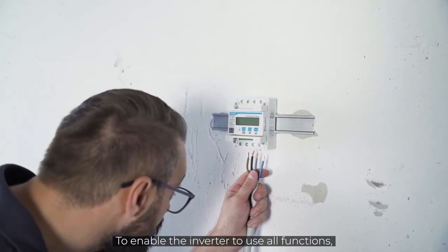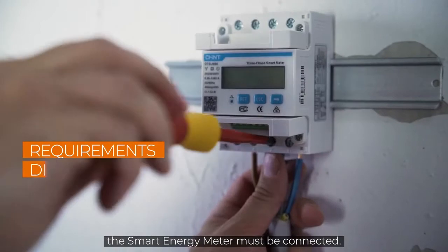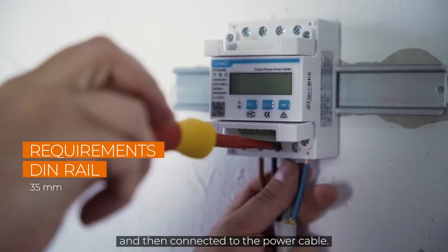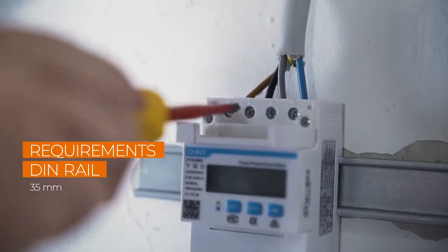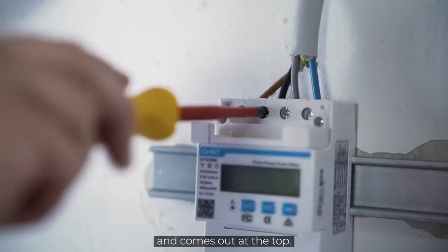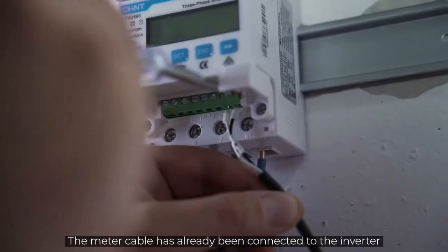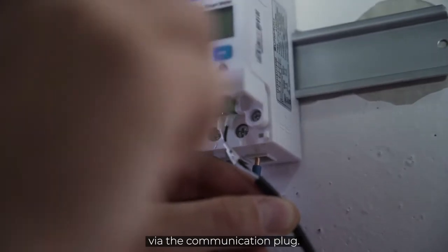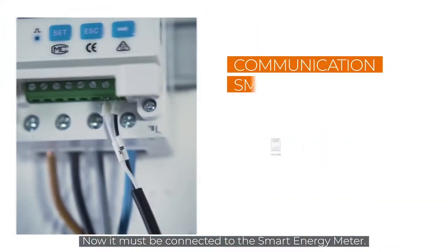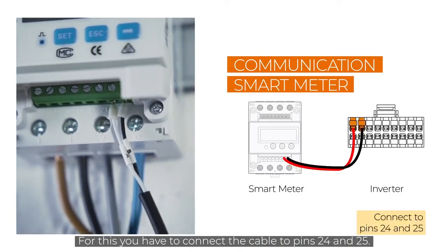To enable the inverter to use all functions, the smart energy meter must be connected. This is mounted on a DIN rail and then connected to the power cable. The power goes into the meter at the bottom and comes out at the top. The meter cable has already been connected to the inverter via the communication plug. Now it must be connected to the smart energy meter. For this, you have to connect the cable to pins 24 and 25.